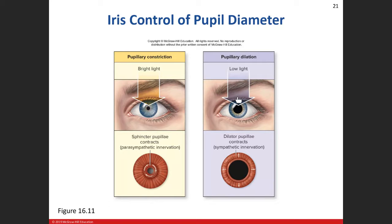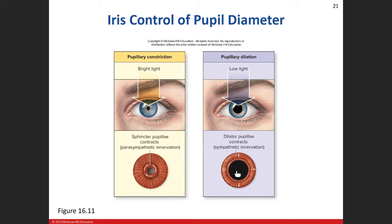In a dark room with hardly any light, the pupil gets bigger. We want it bigger to let in as much light as possible. That dilation is stimulated by sympathetic innervation and involves the dilator pupillae muscles, which are on the periphery of the iris.